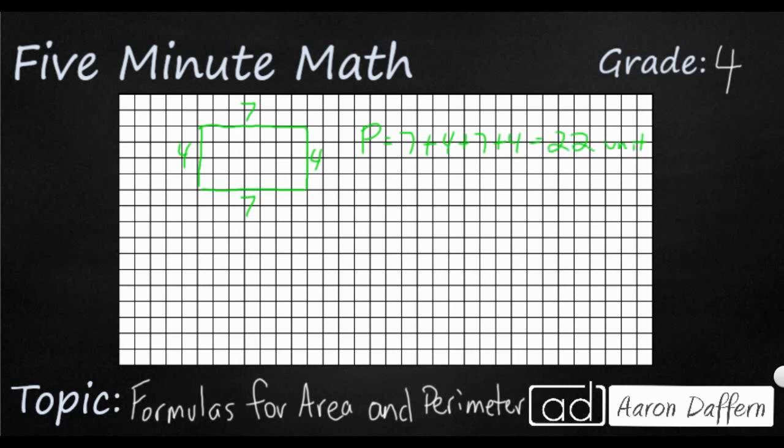But how could we solve that with an equation? Well, you notice that we double the 7 and we double the 4. I've got a 7 here and a 7 here. So one of the equations that we're going to need to know about perimeter is going to be 2 times L. Sometimes it's capital L, sometimes it's lowercase L.